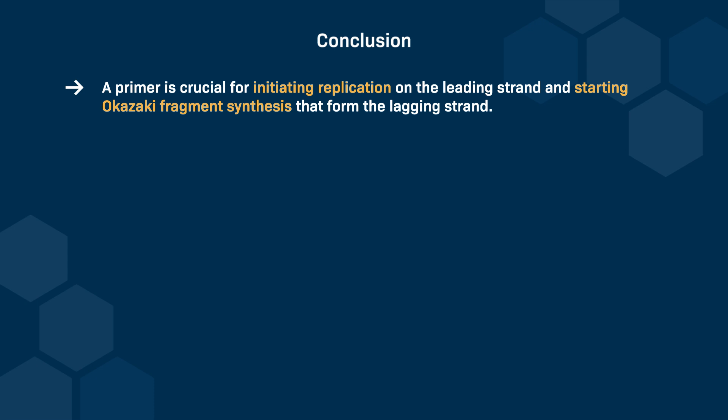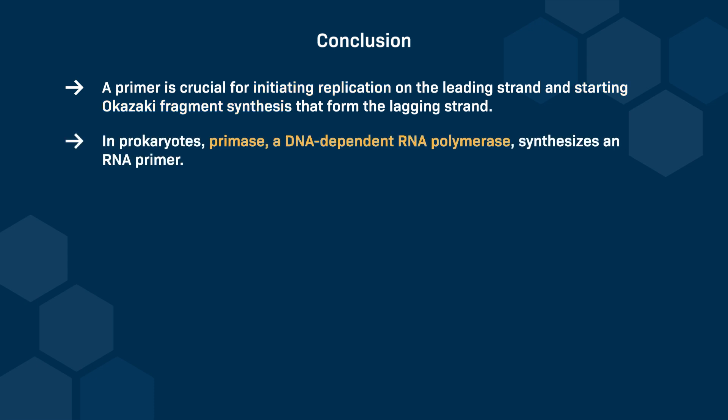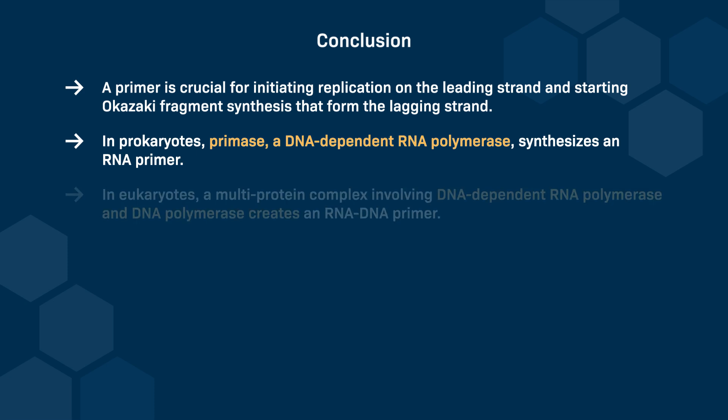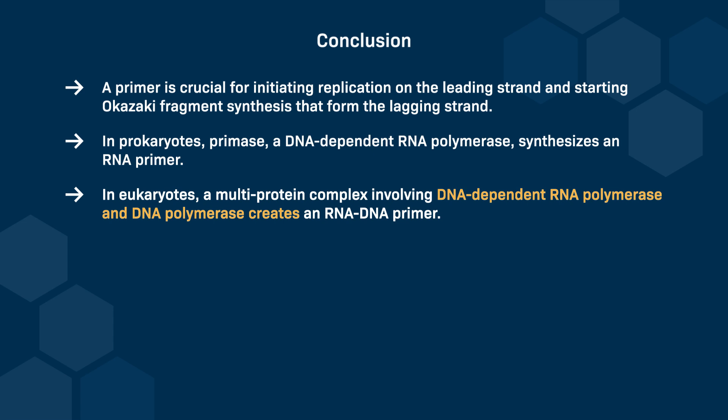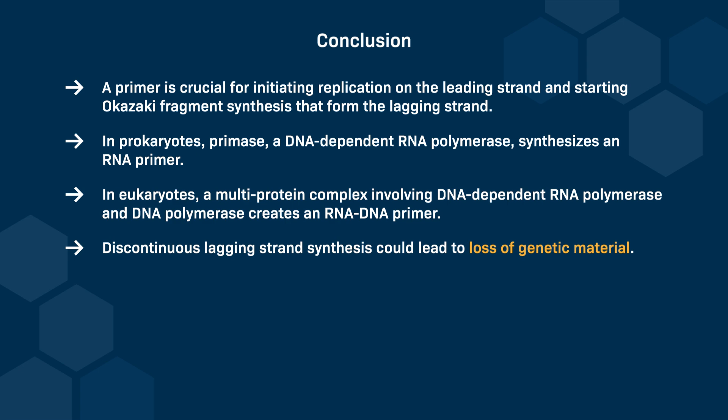In conclusion, a primer plays a critical role in DNA replication by initiating the synthesis of the leading strand and each Okazaki fragment in the lagging strand. Prokaryotes utilize primase, a DNA-dependent RNA polymerase, to synthesize an RNA primer. Conversely, eukaryotes employ a complex that comprises DNA-dependent RNA polymerase for RNA synthesis and DNA polymerase for DNA synthesis, resulting in the formation of an RNA-DNA chimeric primer. The discontinuous synthesis of the lagging strand poses a risk of losing genetic material, which telomerase mitigates. This specialized enzyme ensures genomic integrity by maintaining telomere length, preventing the progressive shortening of chromosomes during DNA replication.